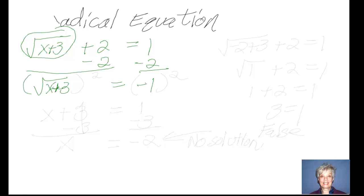I'm going to square both sides of this equation so that I can eliminate the square root radical. Taking the square of a square root radical cancels it out, so I'm left with what's underneath, x plus 3. Over on the right side, negative 1 squared is negative 1 times negative 1, which is positive 1.